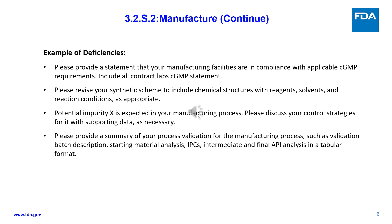Examples of deficiencies for Section S.2: please provide a statement that your manufacturing facilities are in compliance with applicable cGMP requirements, including all contract labs' cGMP statement. Please revise your synthetic scheme to include chemical structures with reagents, solvents, and reaction conditions as appropriate. Potential impurity X is expected in your manufacturing process — please discuss your control strategies for it with supporting data as necessary. Please provide a summary of your process validation for the manufacturing process, such as validation batch description, starting material analysis, IPCs, intermediate and final API analysis, in a tabular format.